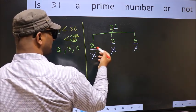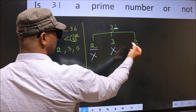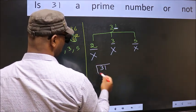So 31 is not divisible by any of these numbers, therefore it is a prime number.